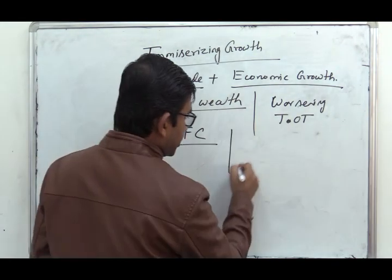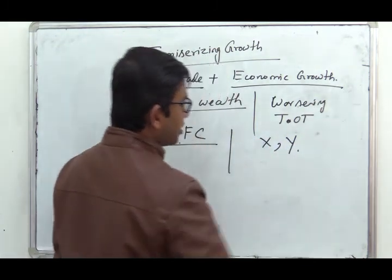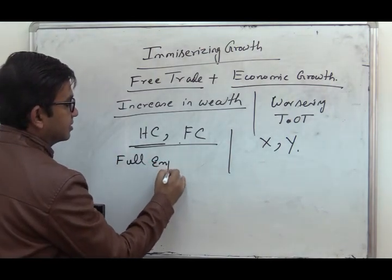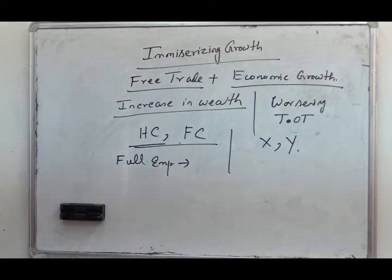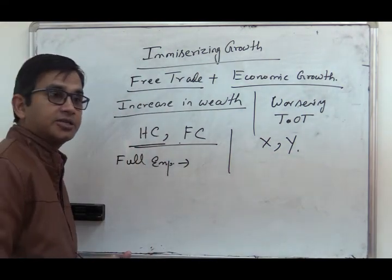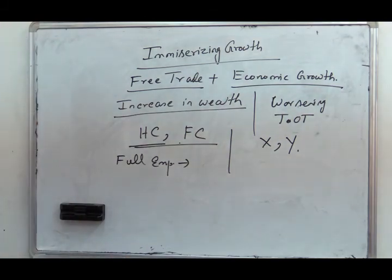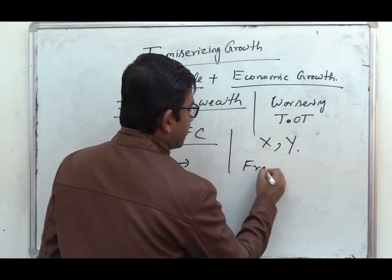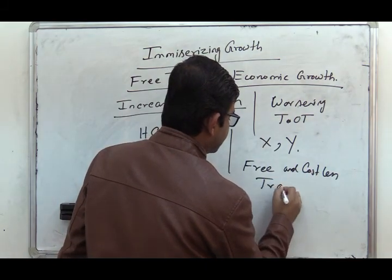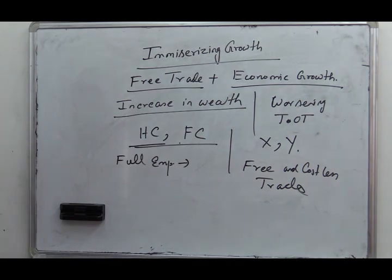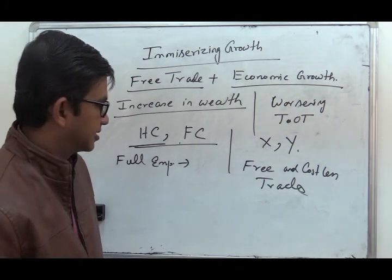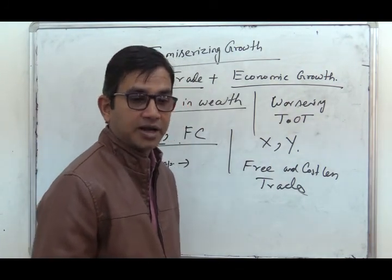Next, we are considering two commodities: Commodity X and Commodity Y. Third, we assume full employment in the home country, meaning resources are perfectly utilized with the help of technology. We are also considering free and costless trade. And factors are mobile — not perfectly mobile, but they are mobile across sectors.